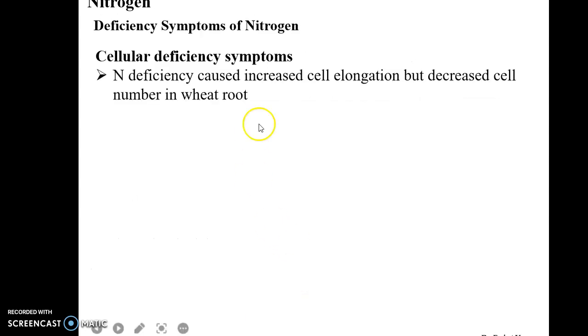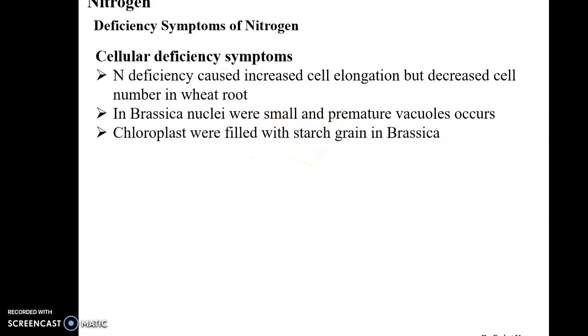Cellular deficiency symptoms include: nitrogen deficiency causes increased cell elongation but decreased cell number in wheat root. In brassica plants, nuclei were small and premature, vacuoles were present, and chloroplasts were filled with starch grains.